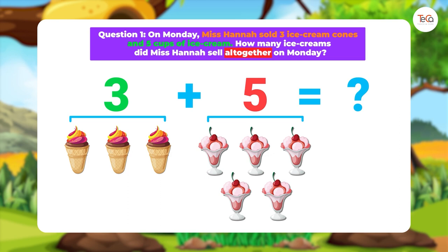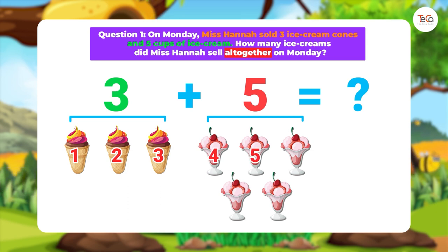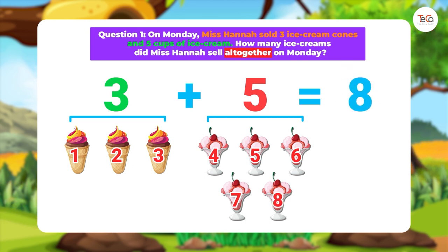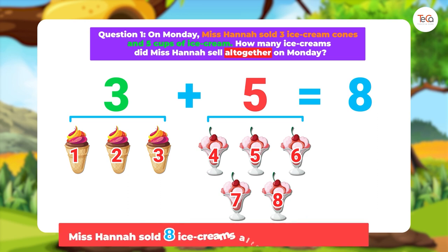Let's count: one, two, three, four, five, six, seven, eight ice creams. So we answer: Miss Hannah sold eight ice creams altogether on Monday.